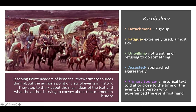A detachment — one meaning of that means like a group. Fatigue means extremely tired, almost sick. Unwilling means not wanting or refusing to do something. Accosted means approached aggressively, like someone comes up suddenly, maybe asks you questions. A primary source is a historic text told at or close to the time of the event by a person who experienced the event firsthand. Keep those words in mind — they're also good words to know and use in your speaking and writing.